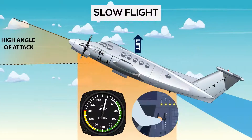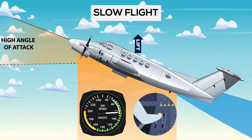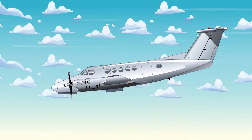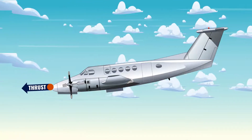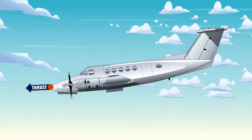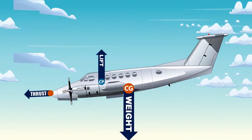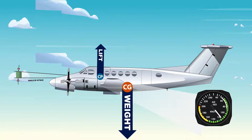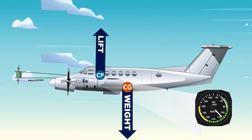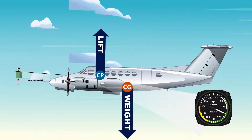Low airspeeds require a rather large angle of attack to maintain altitude. If thrust is reduced, the airplane will lose airspeed and the component of weight will be greater than lift, causing the airplane to descend. By increasing the angle of attack, lift can be created to equal weight and return the airplane to straight and level flight, although at a much slower airspeed.